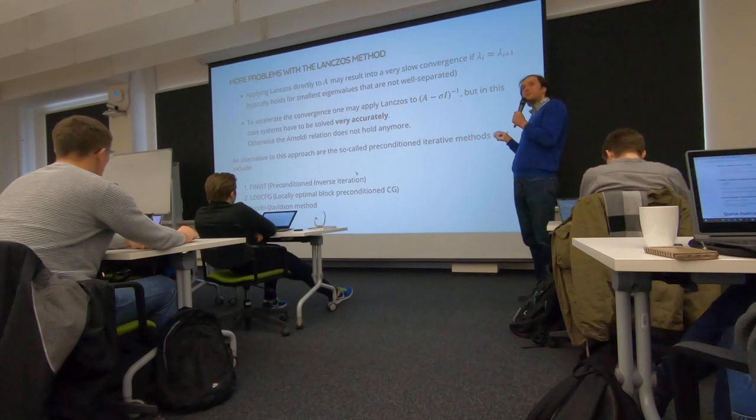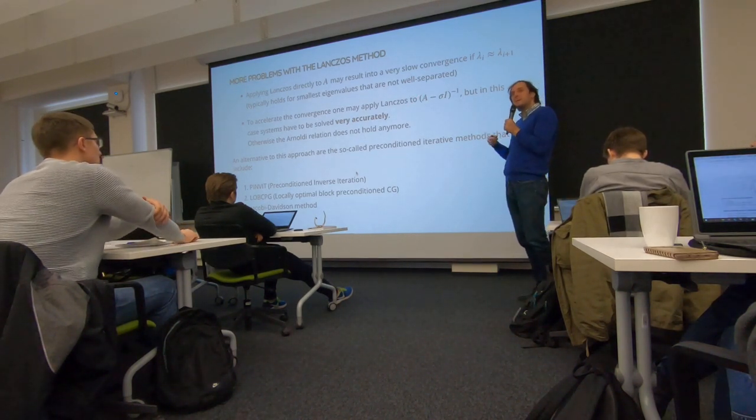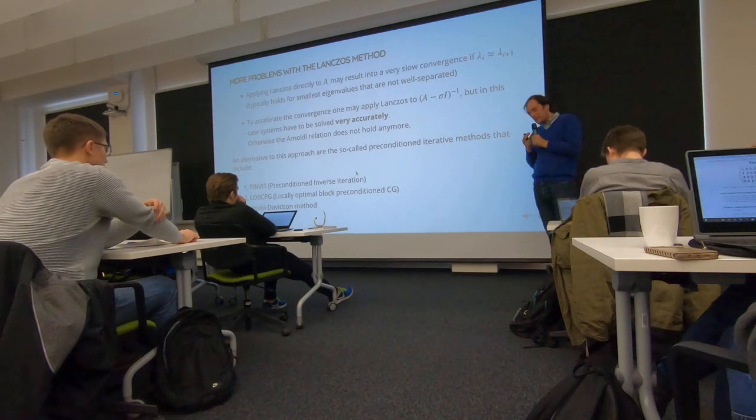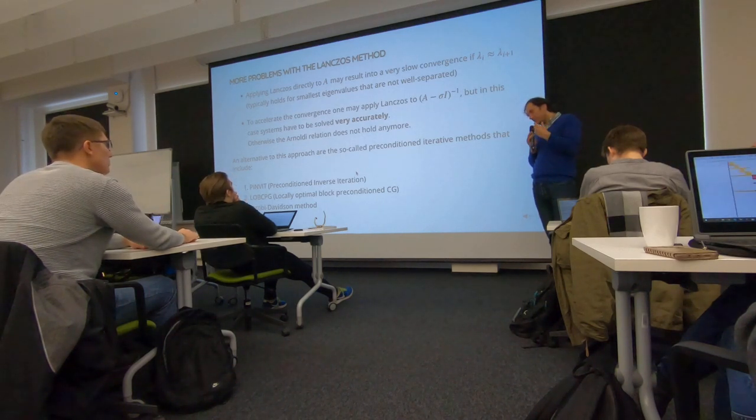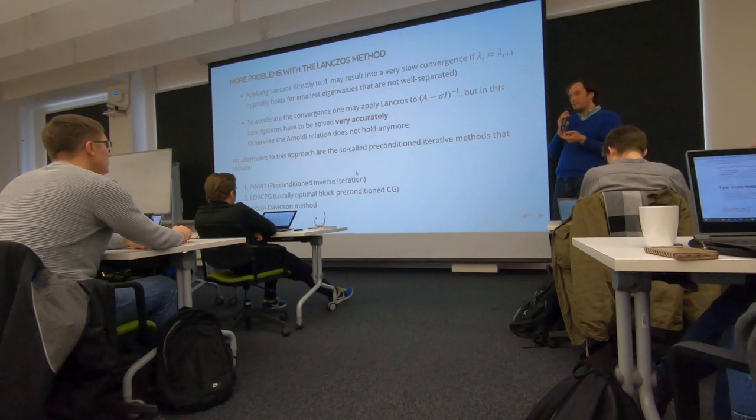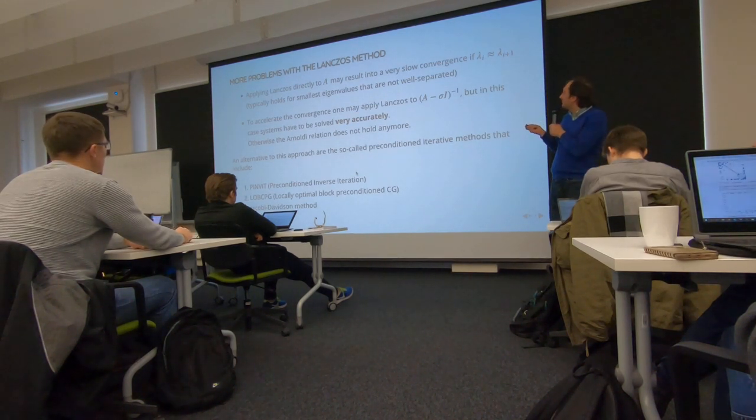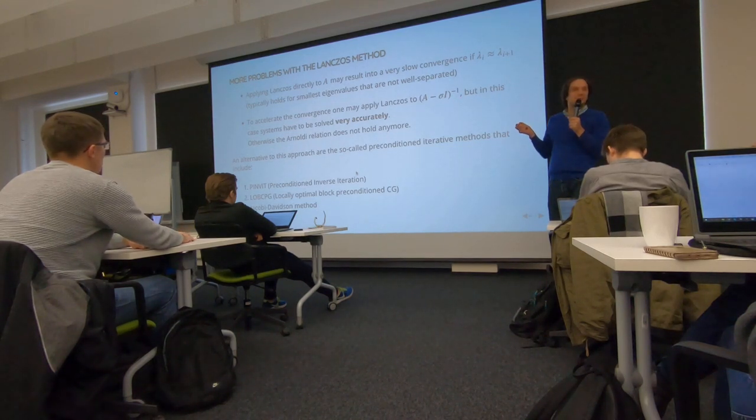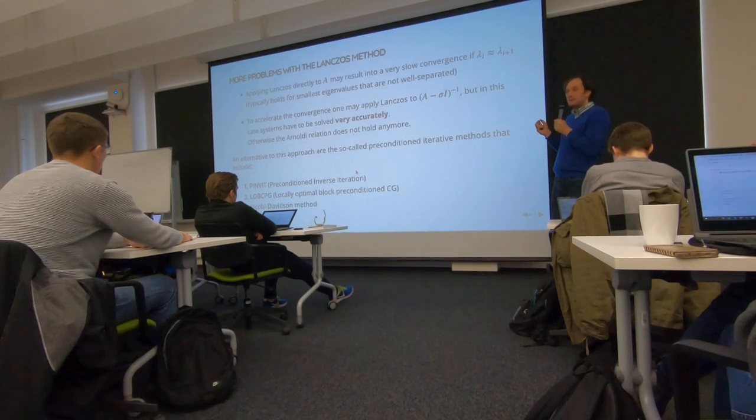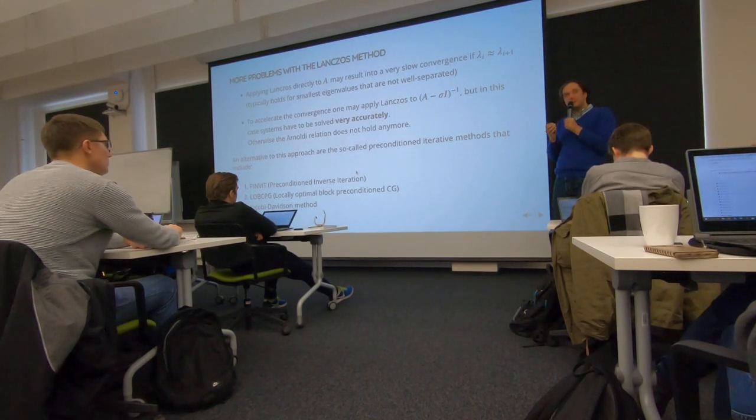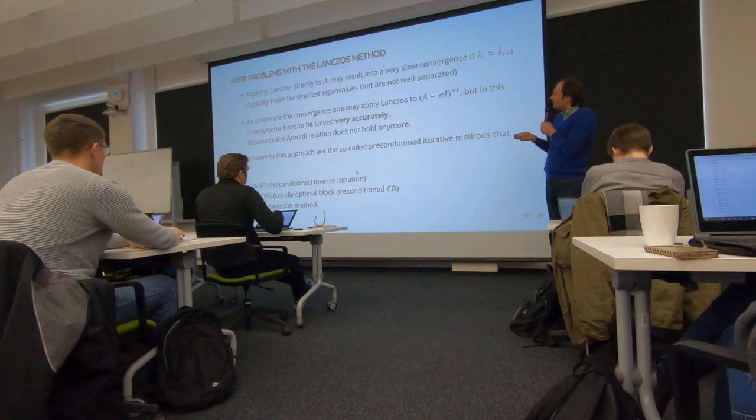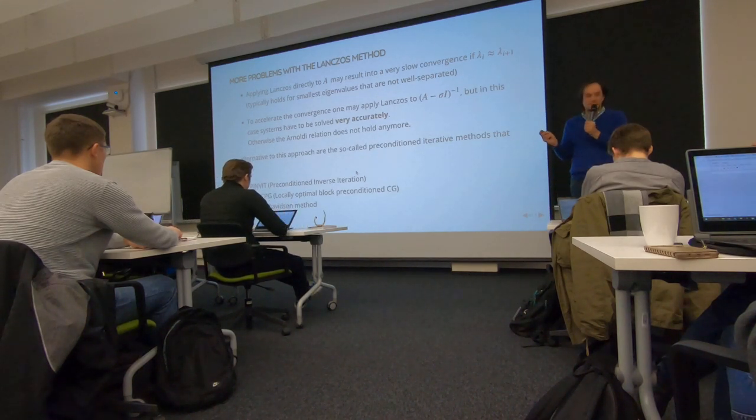You can use shift-and-invert, but the problem here is not the case like preconditioning. If you are solving linear systems, you can actually solve the linear system with the preconditioning inaccurately, and the method will converge. Here, if you want to compute eigenvalues, then you multiply by the inverse of this guy, so the eigenvalues are the same. But if you do it inaccurately, you will get a matrix that has absolutely different eigenvalues. So you have to compute these inverses very accurately, and this makes the shift-and-invert Lanczos almost impractical.